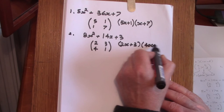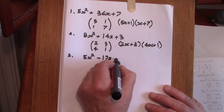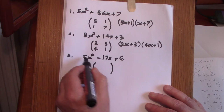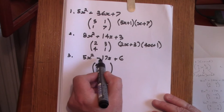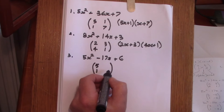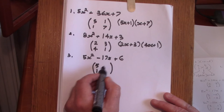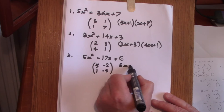Example three: 5x squared minus 17x plus 6. Since 5 is prime, we start with 5 and 1. For 6 we have two pairs of factors: 1 and 6, and 2 and 3. We have a negative 17 and a positive 6, so both numbers must be negative. We need 3 and 2 — both negative — giving minus 15 take away 2 which is minus 17. The result is (5x − 2)(x − 3).